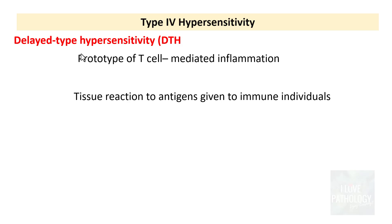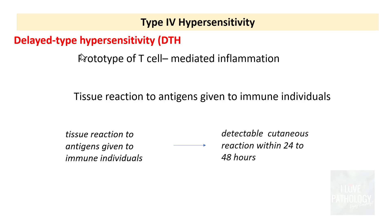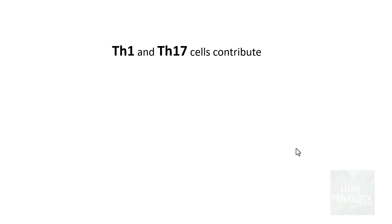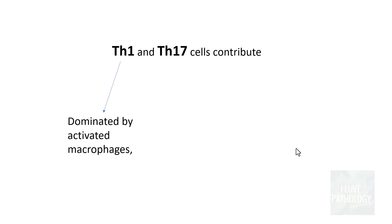In delayed type hypersensitivity, there is a tissue reaction to antigens when given to an immune individual, and this tissue reaction is detectable within 24 to 48 hours. The cells which contribute are T helper 1 and T helper 17 cells. T helper 1 is dominated by activated macrophages, whereas T helper 17 response is dominated by neutrophils.